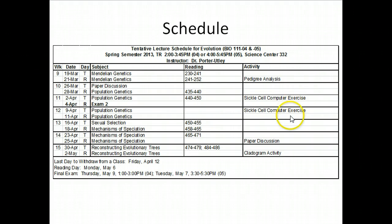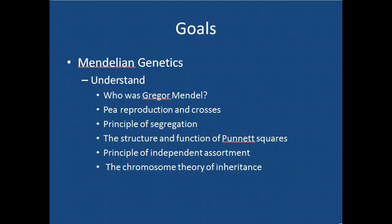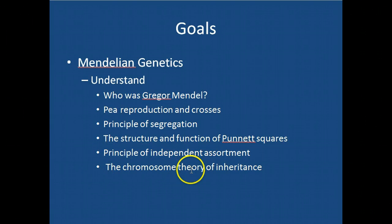Okay, let's get going with the lecture. Today we're talking about Mendelian genetics. I'm going to tell you a little about who Gregor Mendel was, talk about pea reproduction and the types of crosses Mendel made, and we're going to cover the principle of segregation, the structure and function of Punnett squares, the principle of independent assortment, and the chromosome theory of inheritance.